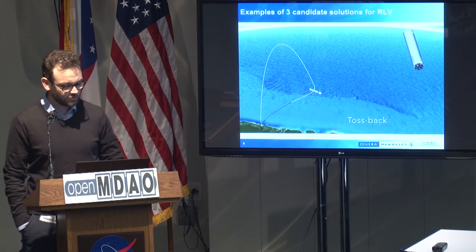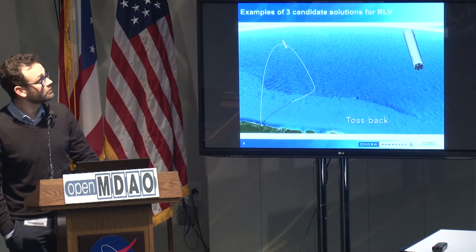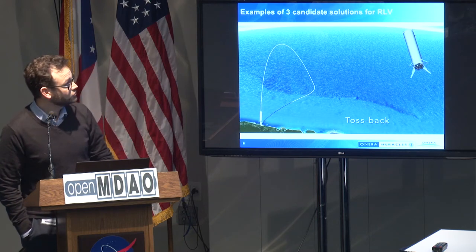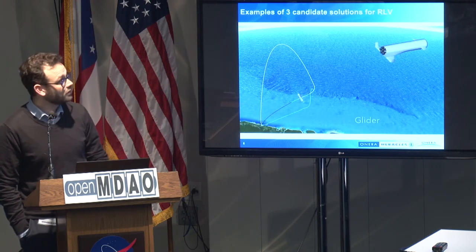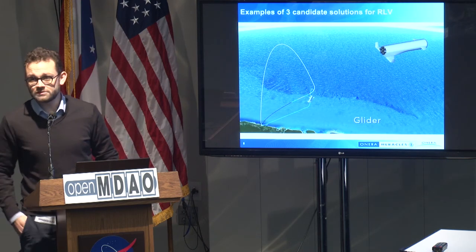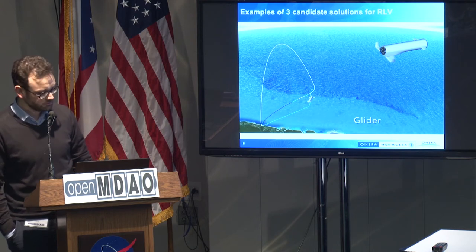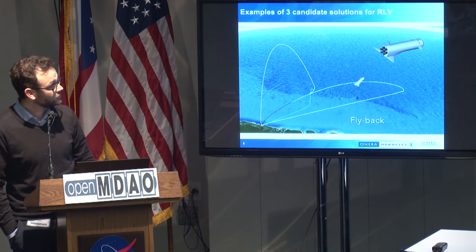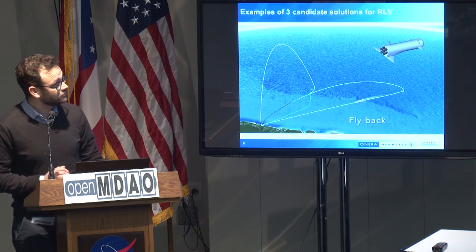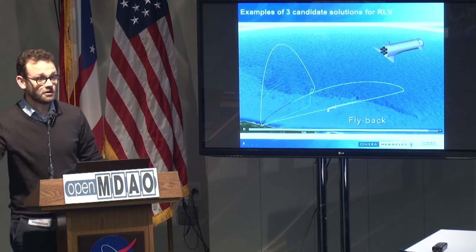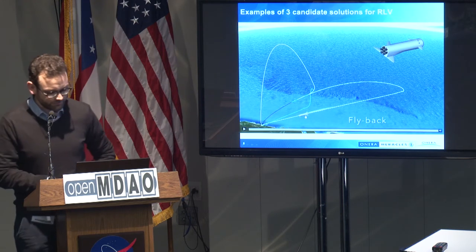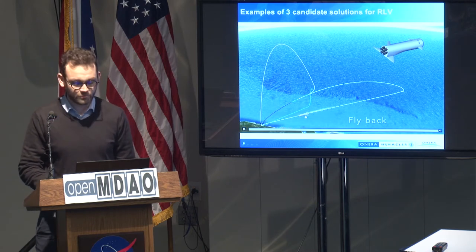Here you have three illustrations of possible reusable launch vehicles. The first is a tossback solution promoted by the Falcon 9 of SpaceX — you all know this solution that uses the main propulsion to perform the return strategy. But you can also imagine other solutions by providing the main core with aeronautic technology, such as the glider or the flyback solution, which returns to the landing site using four turbojets located in the nose. At Onera, we explore such kinds of reusable launch vehicle configurations.